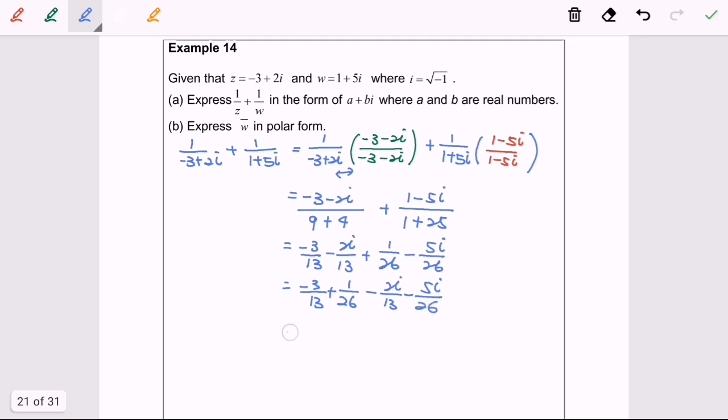So after we simplify, we will have negative 5 over 26 minus 9i over 26. So that will be the answer for 1 over z plus 1 over w.